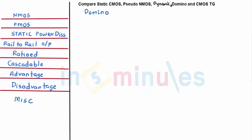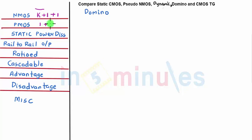Let's focus on the domino logic family. Domino is the same as dynamic with an added static inverter. The number of NMOSes for domino is k+2 (k+1 for dynamic plus 1 NMOS from the static inverter), and the number of PMOSes is 1 for dynamic plus 1 from the static inverter.